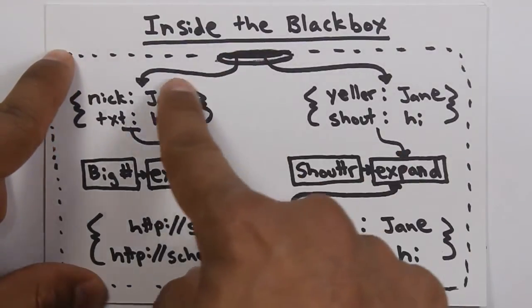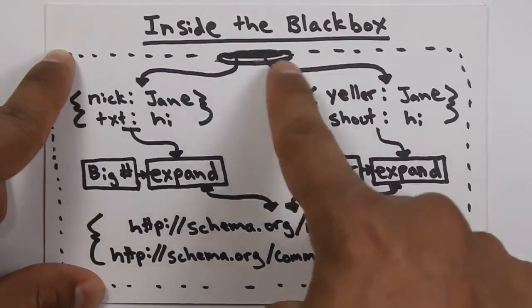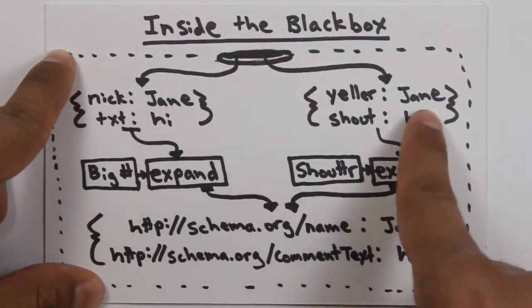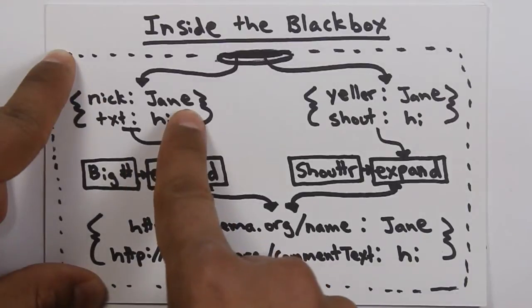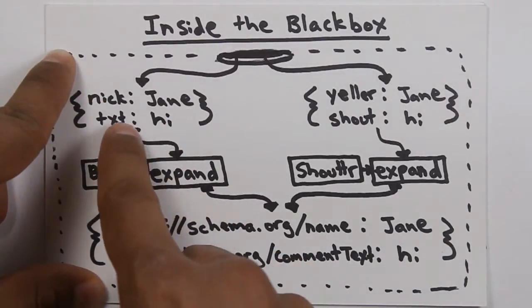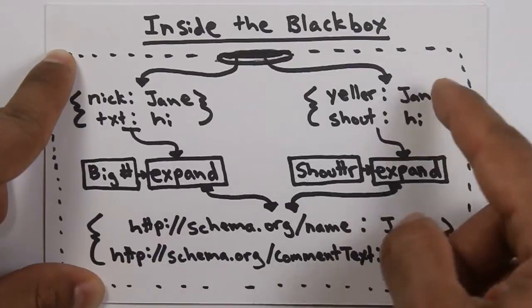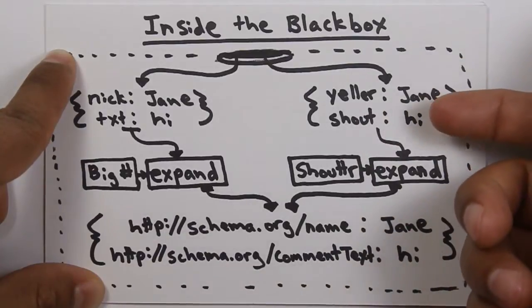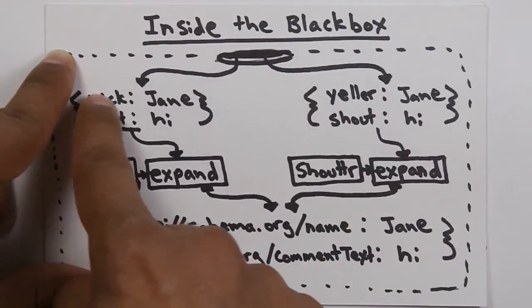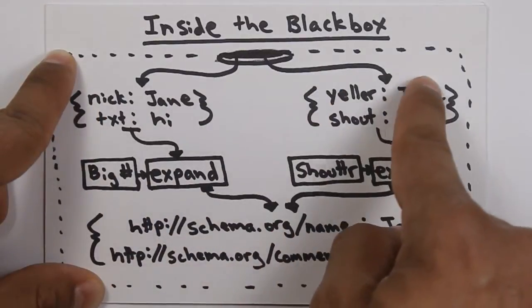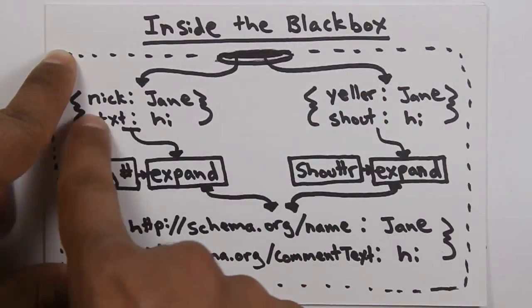So, inside the black box, we've got two pieces of data coming in. This piece of data is coming from a service called Shouter, and this piece of data is coming from a service called BigHash. And the data looks more or less the same. To humans, you can pick out that this is probably the user ID here, nick, jane, yeller, jane. And this is the message.